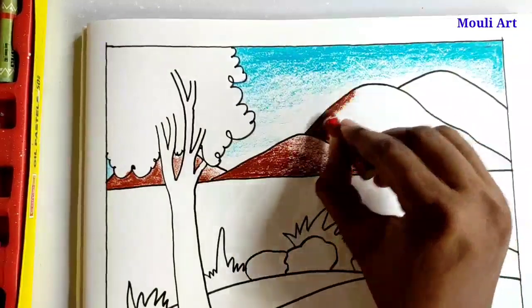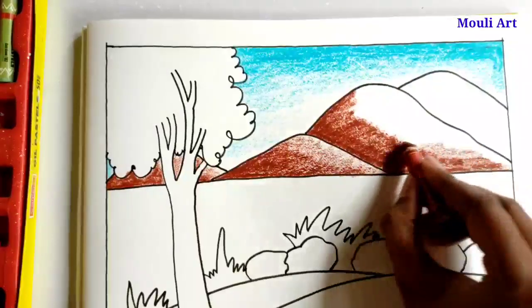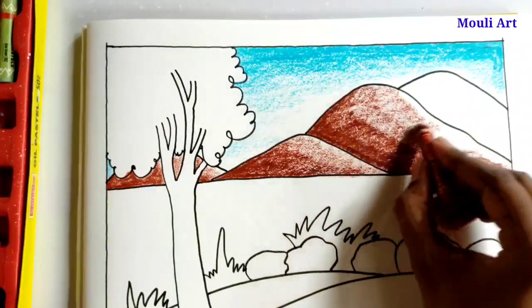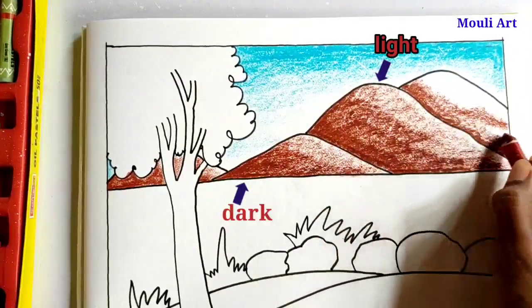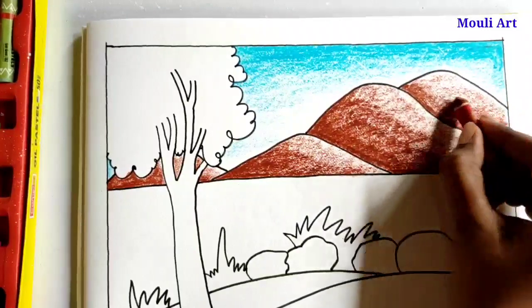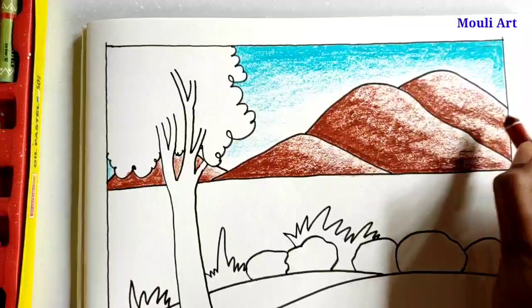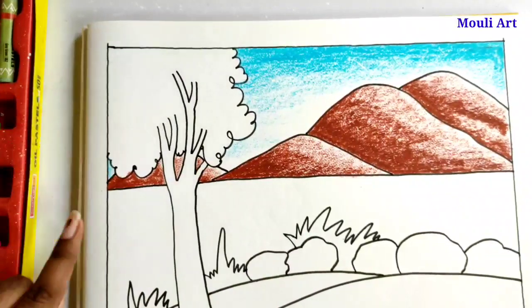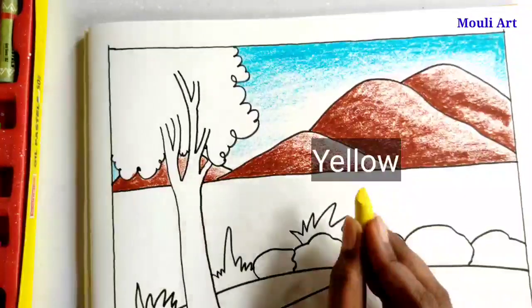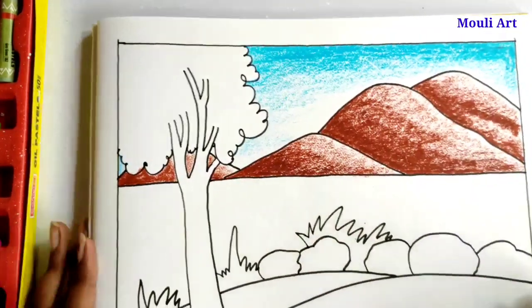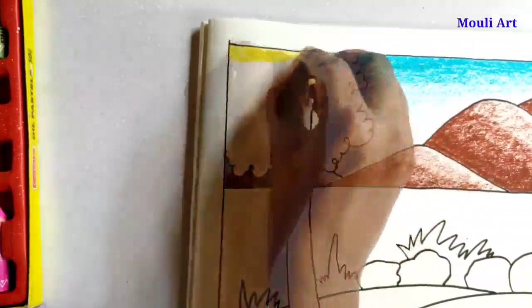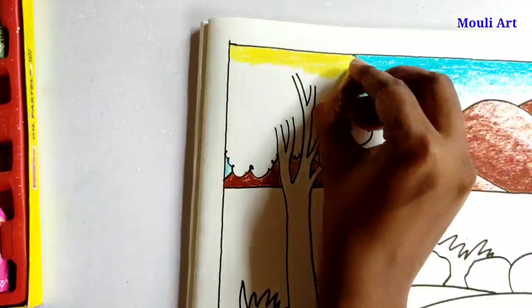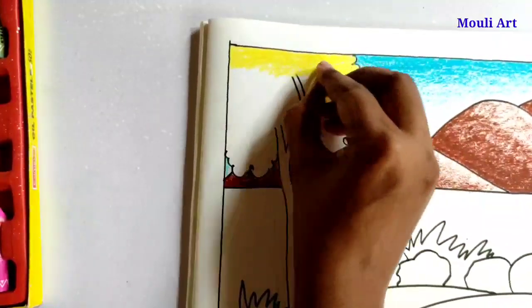You can see how I have colored it. Now time for tree leaves. Here I am using four colors: yellow, light green, leaf green, and dark green. First we'll color it with yellow.